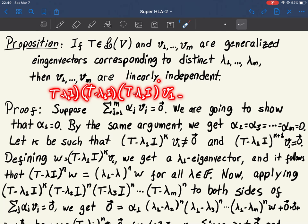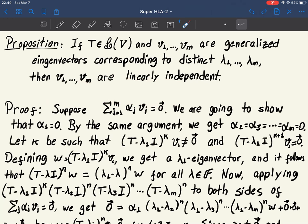Maybe now it's zero. Suppose now it's zero. If now it is zero, but before it was not zero, it means this part here is an eigenvector. Because it's not zero, and because T minus lambda 1 I applied to it is zero.